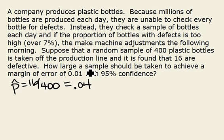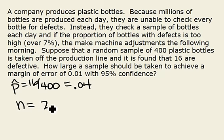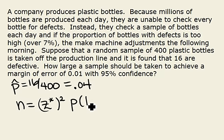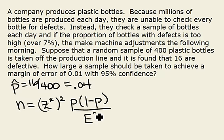We have a formula that is a rearrangement of the error for our confidence interval. It says that if you rearrange everything, your sample size n equals your z-value (called z-star) squared, times your proportion, times 1 minus your proportion, over the desired amount of error squared.